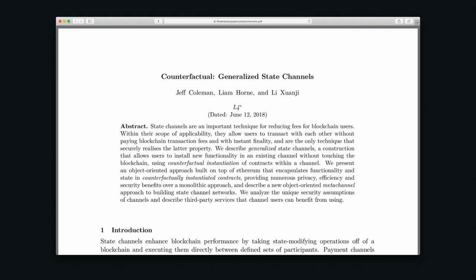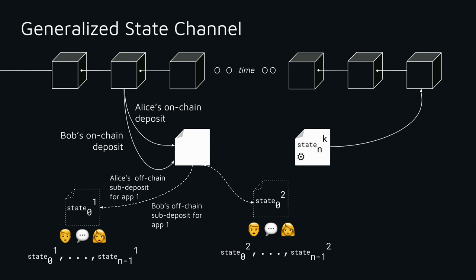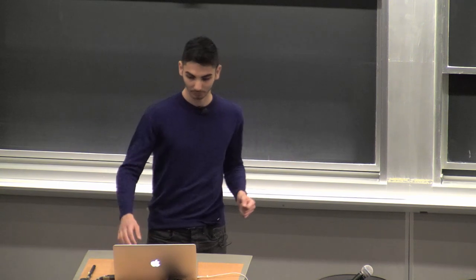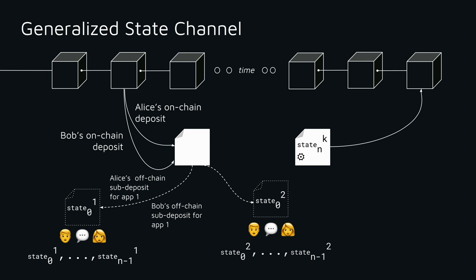Generalized state channels bring the ability to use a technique Jeff Coleman came up with called counterfactual instantiation — a fancy term for saying that if you have a channel open, you can take your deposits and allocate segments toward different applications within the channel. If you already have a channel open and want to play chess, you can use a portion for that game while using the remainder for another application, having multiple sub-channels open within the same channel instead of opening multiple channels with the same set of users.